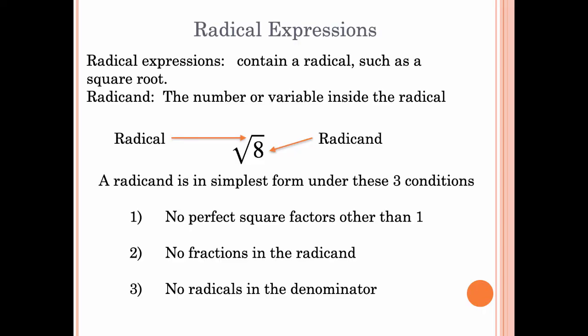Radical expressions contain a radical, such as a square root, and the radicand is the number or variable inside the radical symbol. You have the radical on the outside and the radicand on the inside. A radicand is in simplest form under three conditions: no perfect square factors other than one, no fractions inside the radicand, and no radicals in the denominator.